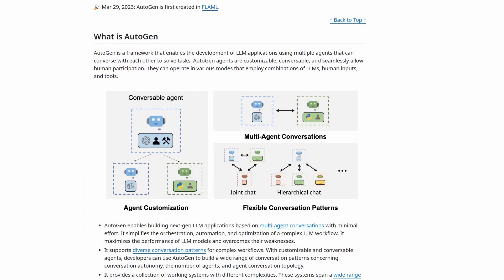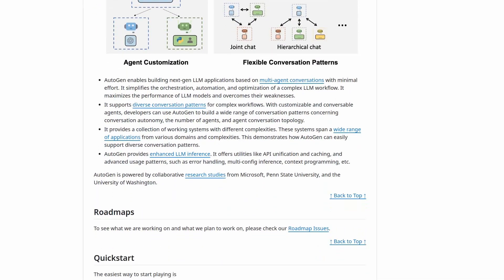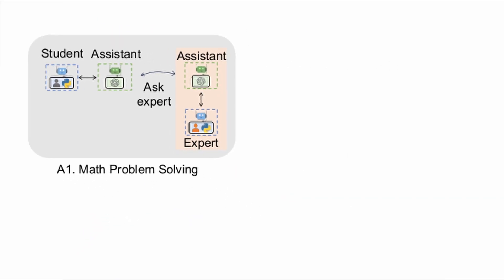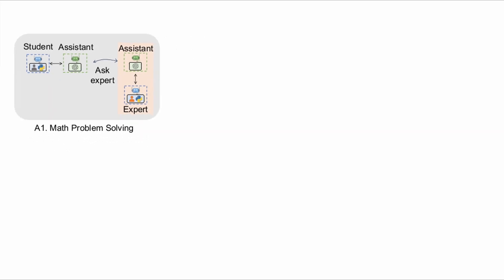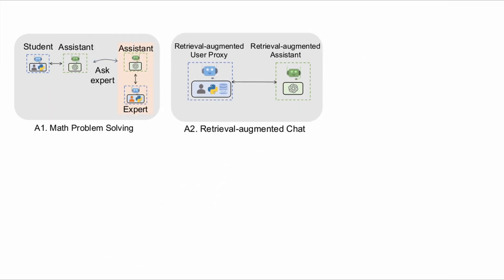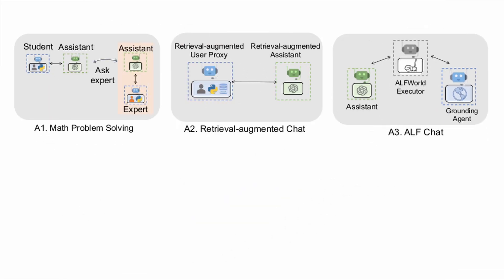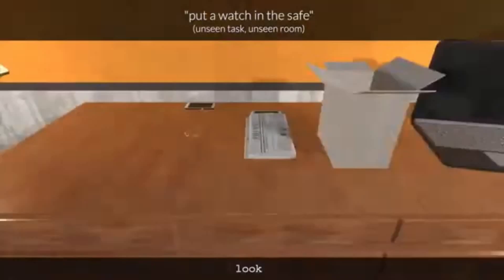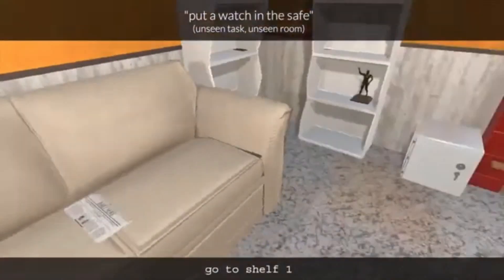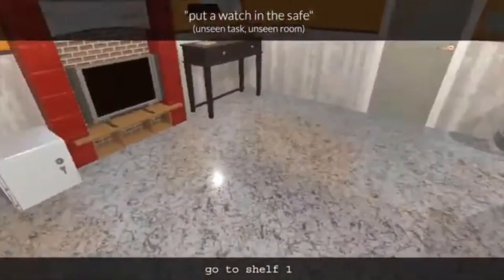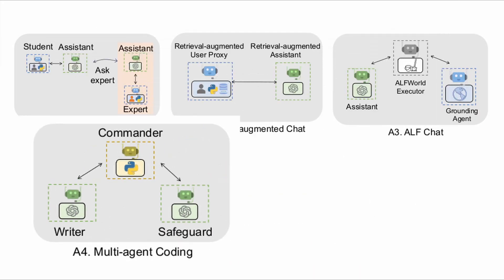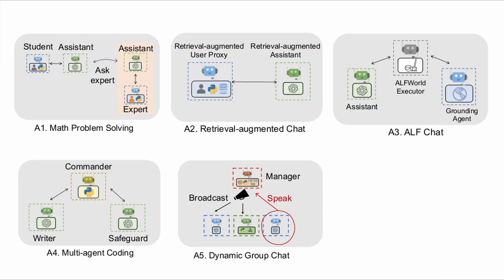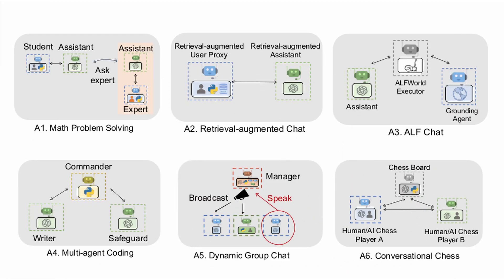The AutoGen paper showcased six applications and use cases: math problem solving, retrieval-augmented chat, ALFWorld-based navigation as an AI detector and navigator, multi-agent coding, dynamic group chat, and conversational chess.